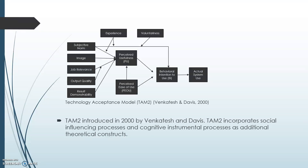These social constructs bring in more parts of the theory of reasoned action and the decomposed theory of planned behavior. The cognitive instrumental processes include perceived usefulness, job relevance, output quality, result demonstrability, and perceived ease of use. Venkatesh and Davis argue that individuals form perceived usefulness judgments by cognitively comparing what a system is capable of doing with what they need to get done in their job. Job relevance is defined as how well an individual regards the system as important to their job. People will also take into account how well the system performs tasks, the quality of output, and whether results are demonstrable.